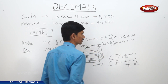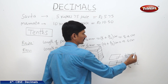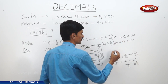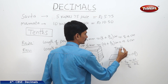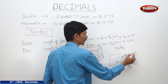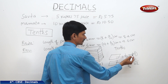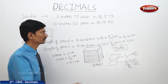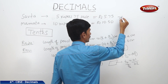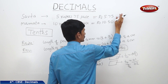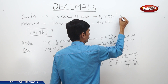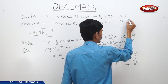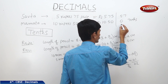The decimal point lies between the whole part and the tenths part. The digit to the right of the decimal point is in the tenths place, and zero is in the ones place. For example, if we want to write five point seven in a place value table, we write five in the ones place and seven in the tenths place.